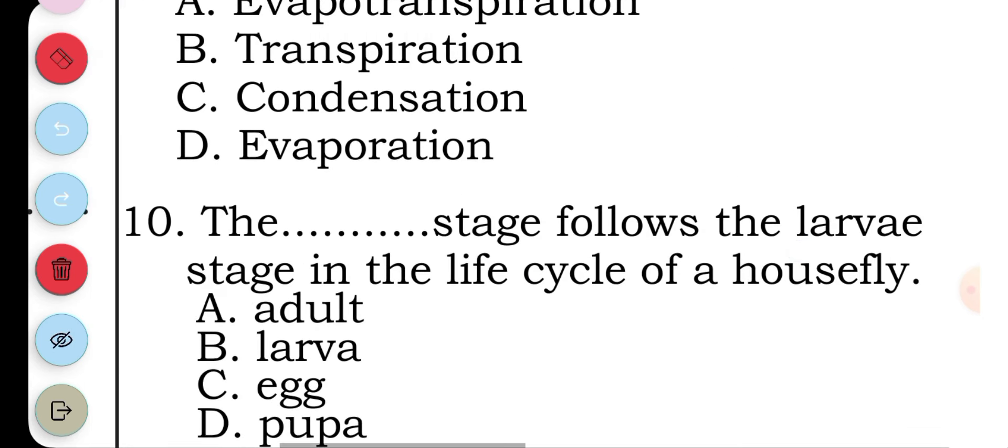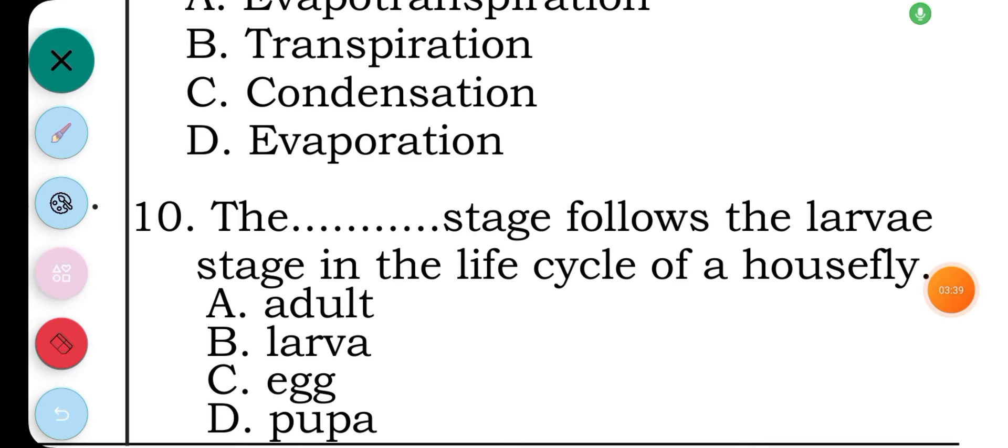Question ten: the blank stage follows the larva stage in the life cycle of a housefly. We have: A adults, B larva, C egg, D pupa. The answer to question ten is D, the pupa stage follows the larva stage.